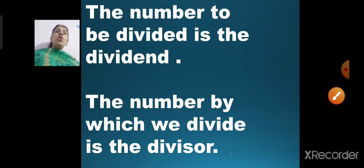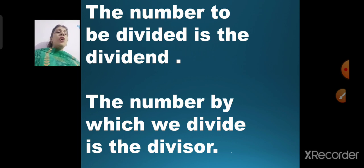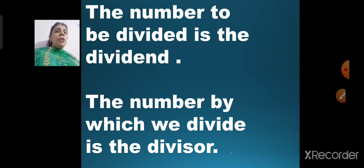The number to be divided is the dividend. Which number is to be divided? Number 6 — so that is our dividend. The number by which we divide was 2, so 2 is the divisor. The answer which remains is known as the remainder, and the number on top is known as the quotient.